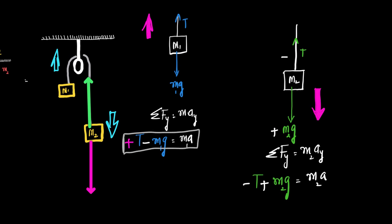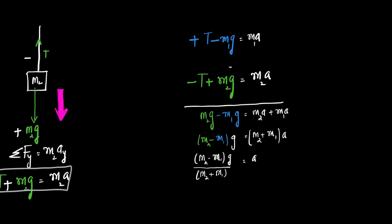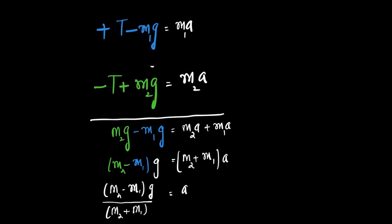We now have equation one and equation two. Adding them together, T minus T cancels to zero, and what remains is m2·g minus m1·g equals m2·a plus m1·a. Taking g common from the left side gives g times (m2 minus m1) equals a times (m2 plus m1). Therefore, acceleration a equals (m2 minus m1) divided by (m2 plus m1), times g.